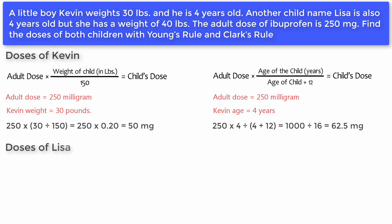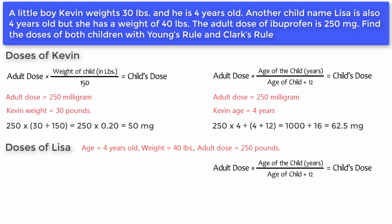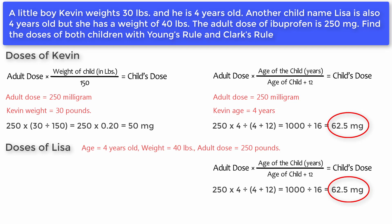Now let's apply both rules for the second child, Lisa — age 4, weight 40 pounds, adult dose 250 milligrams. Young's Rule: adult dose times age of the child in years, divided by age of the child plus 12, equals child's dose. 250 times 4, divided by 4 plus 12, equals 1000 divided by 16, equals 62.5 milligrams — the same answer as Kevin's dose using Young's Rule.